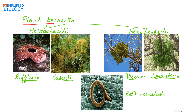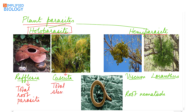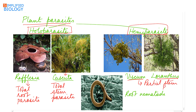Plant parasites include plants growing on other plants or animals growing on plants. They are divided into two types: holoparasites and hemiparasites. Holoparasites are completely dependent on the host plant for nutrition — for example, Rafflesia, the largest flower, is a total root parasite, and Cuscuta is a total stem parasite. Viscum and Loranthus are hemiparasites, meaning they are only partial parasites.